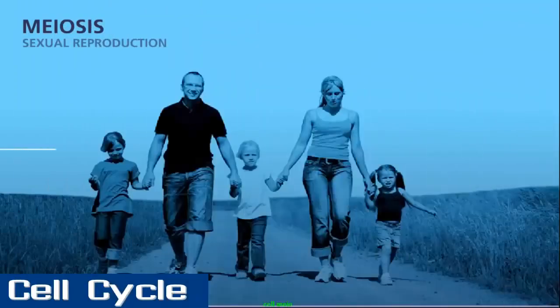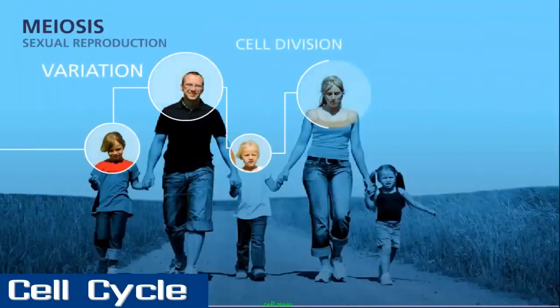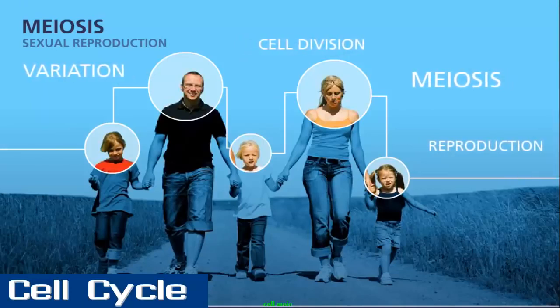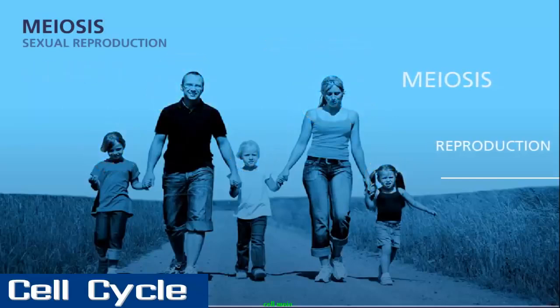Have you ever wondered why children do not look exactly like their parents, or why some siblings look so different from each other? The answer lies in the process of meiosis, which generates the gametes for reproduction.